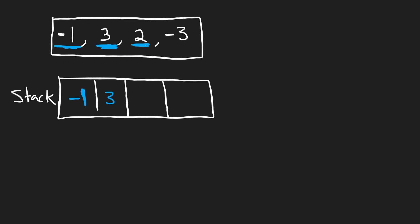Let's look at the next value, 2. The 2 is also moving to the right because it's positive. The previous asteroid was also moving to the right, so there's no need for a collision. We can take this 2 and add it to our stack.